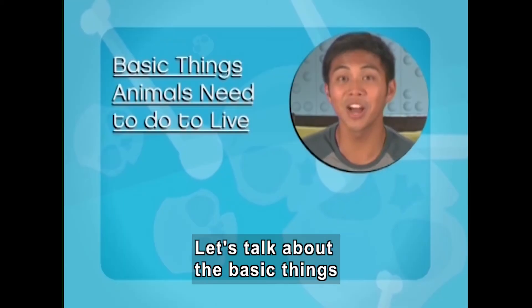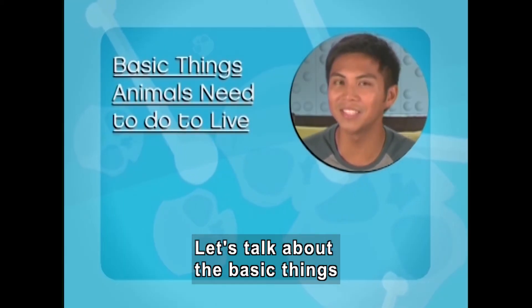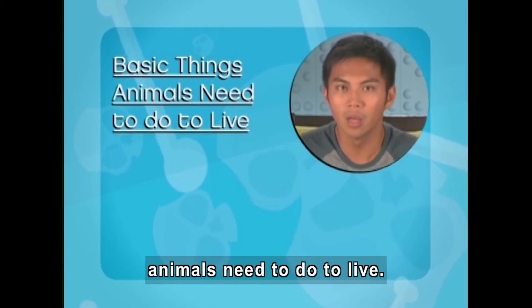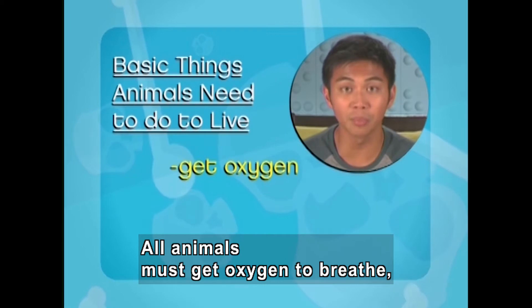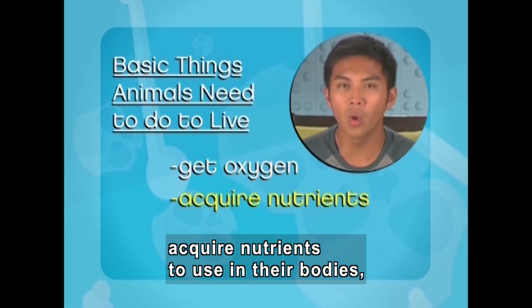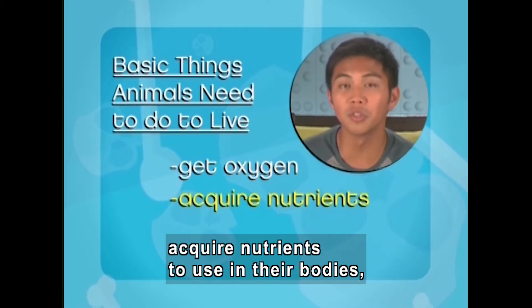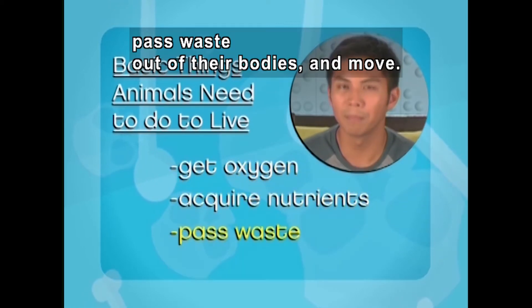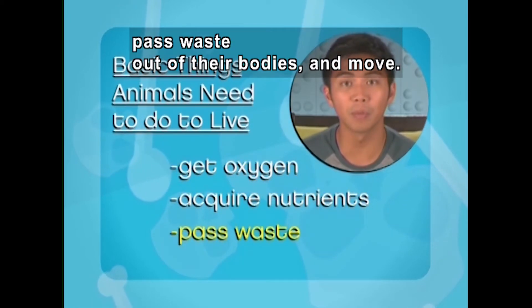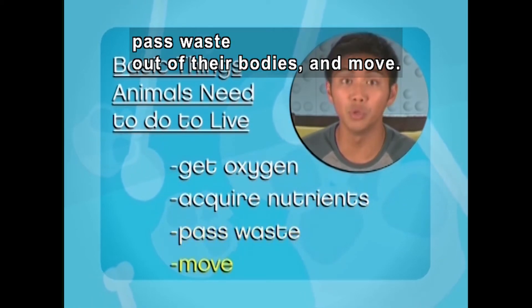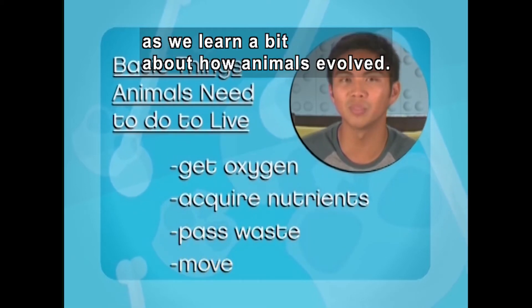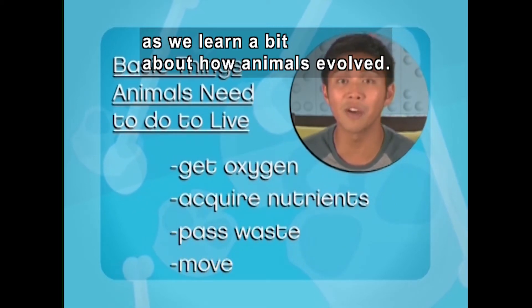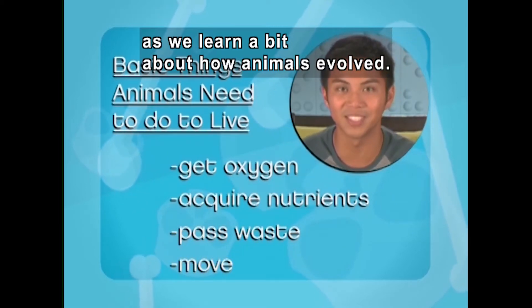Let's talk about the basic things animals need to do to live. All animals must get oxygen to breathe, acquire nutrients to use in their bodies, pass waste out of their bodies, and move. Keep these things in mind as we learn a bit about how animals evolved.